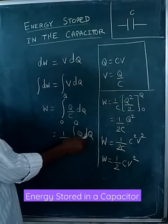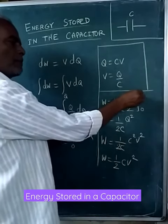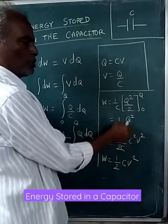On integration, the integral of Q dQ is Q squared by 2. That's what is written here. You apply the upper limit minus lower limit, you will get 1 by 2C Q squared.